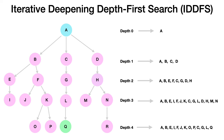To recap iterative deepening DFS: we had various depth limits and traversed based on them. If depth limit is 0, we only traverse A; if 1, we traverse A, B, C, D; if 2, A, B, E — going depth-first until the depth limit, then moving to adjacent nodes. In IDA*, however, F(n) is used as the cutoff instead of depth.